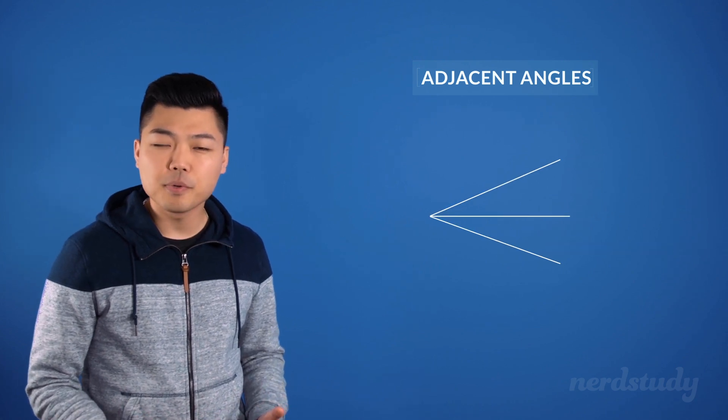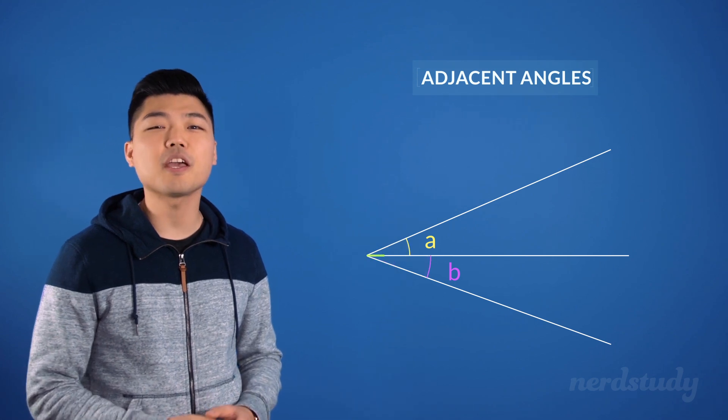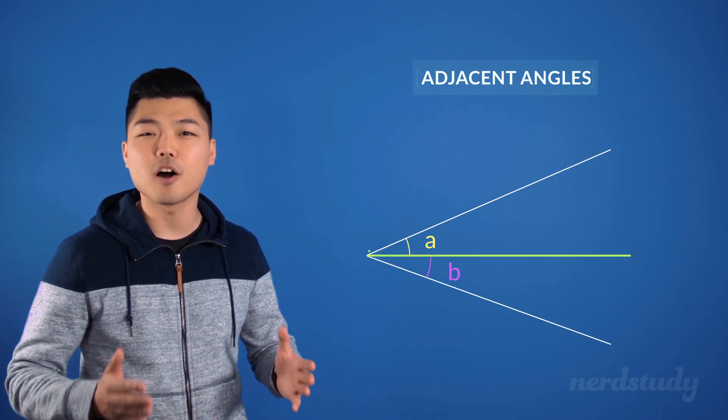This is another example of adjacent angles since, as we can see, they share a common side and a common vertex.